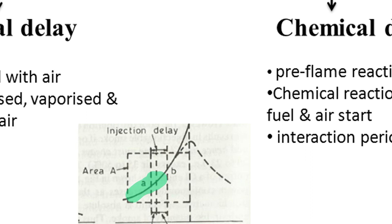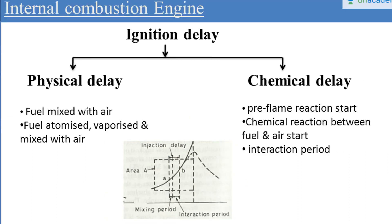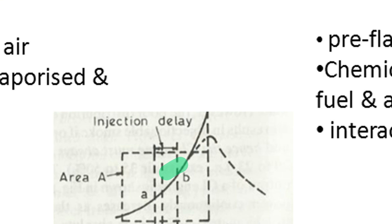During physical delay, the fuel is injected and mixed with air — the fuel atomizes, vaporizes, and mixes with air, and the temperature increases. In chemical delay, we generally consider the pre-flame reaction starts. This chemical reaction between the fuel and air starts to ignite the fuel at point B and continues up to ignition. As seen in this diagram, the chemical delay is a bit longer than the physical delay, but this duration always depends upon the temperature inside the combustion chamber.